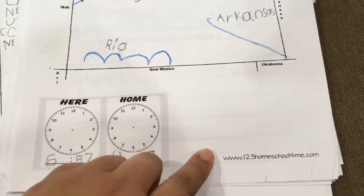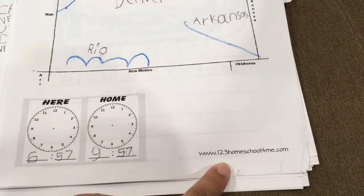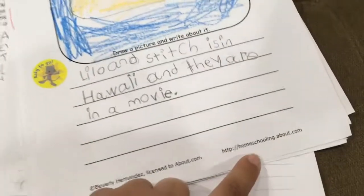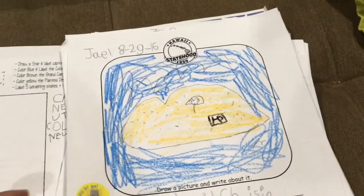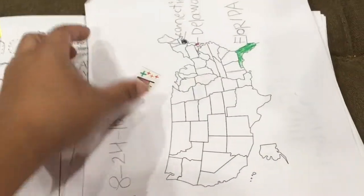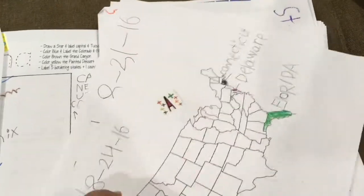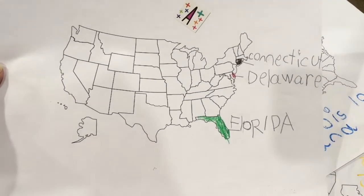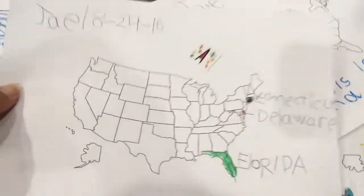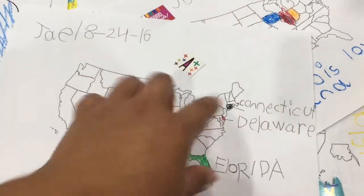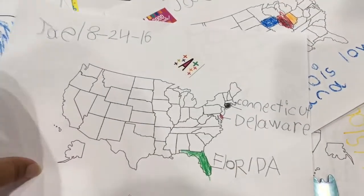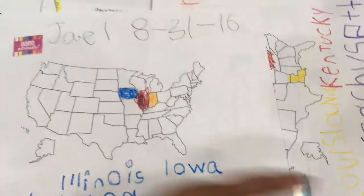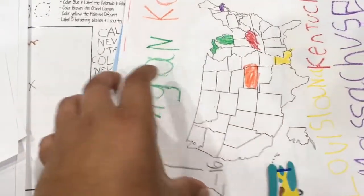I'll show you more activity sheets we used. The next one we concentrated on was Colorado — I got it from 123homeschool4me. This one on Hawaii was from homeschoolingabout.com. I also got a plain blank United States map printout, and for states I couldn't find activity sheets on — like Connecticut, Delaware, and Florida — I just gave him the blank sheet and he would find and write them in. That was a fun break from the regular sheets.